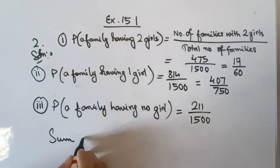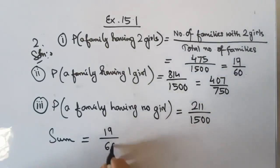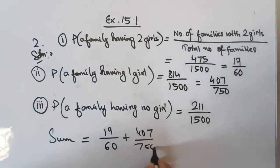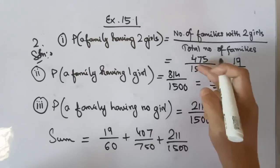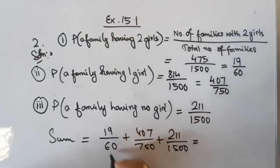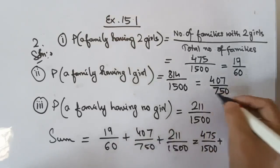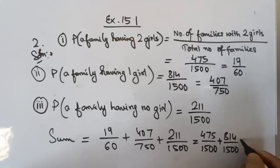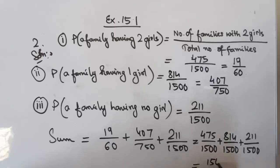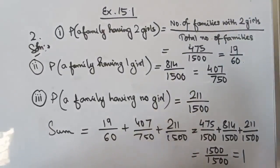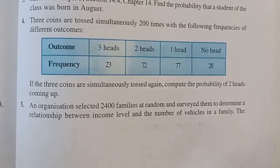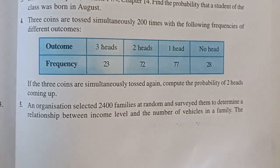We are also asked to verify whether the sum of all three probabilities equals one. The sum is 19 by 60 plus 407 by 750 plus 211 by 1500. Converting to a common denominator of 1500: 475 by 1500 plus 814 by 1500 plus 211 by 1500 equals 1500 by 1500, which is equal to 1. So the sum of all probabilities equals one. Next, question number 5: An organization selected 2400 families at random and surveyed them to determine the relationship between income level and the number of vehicles in the family.